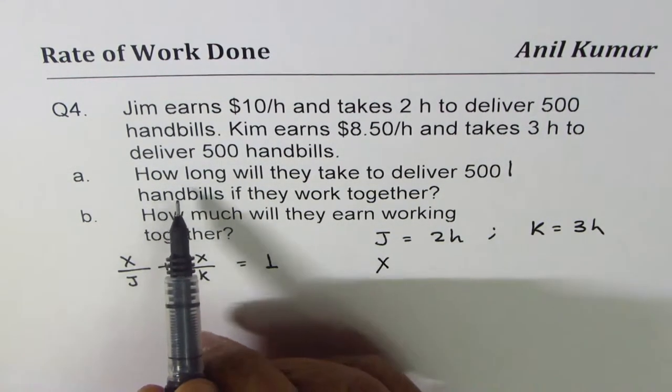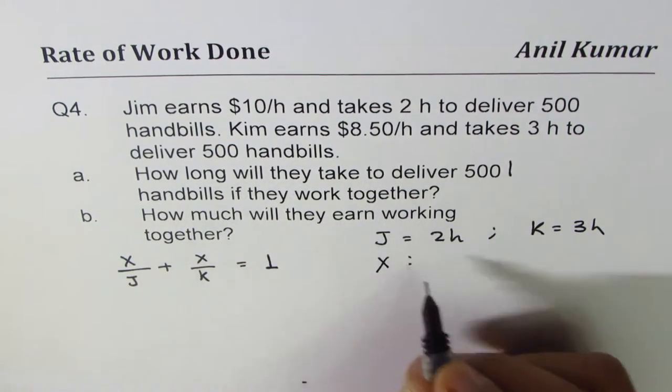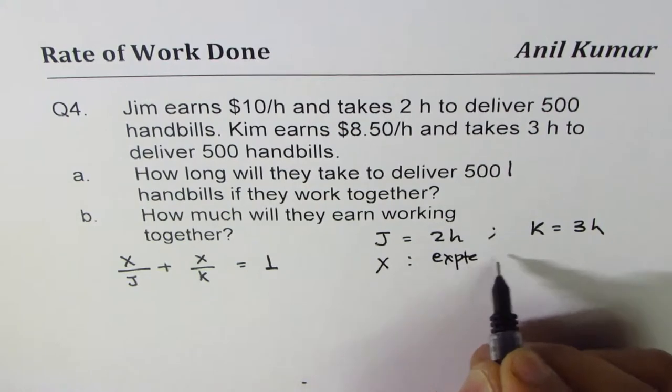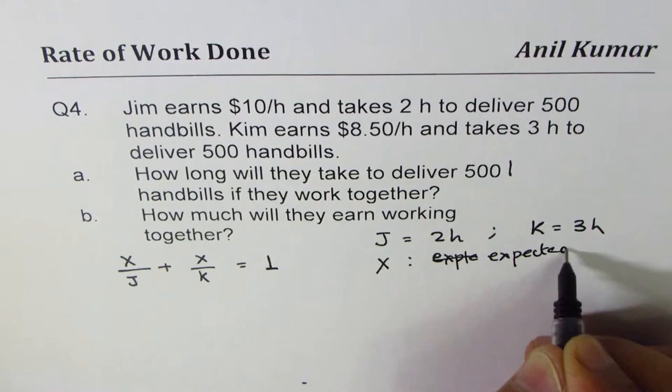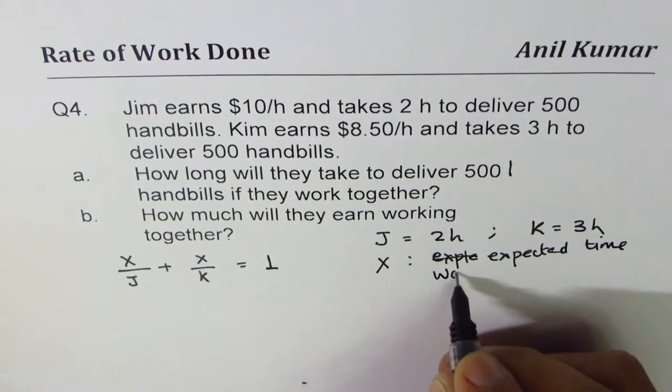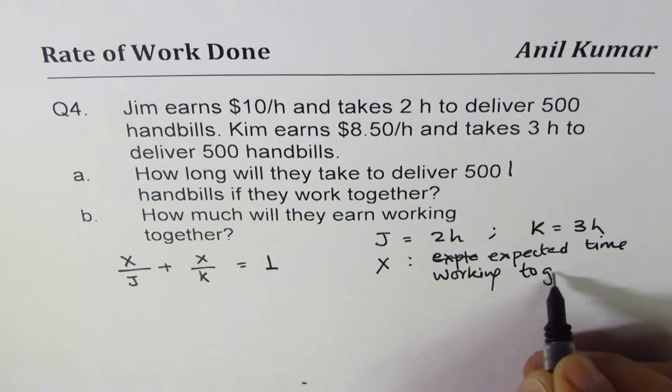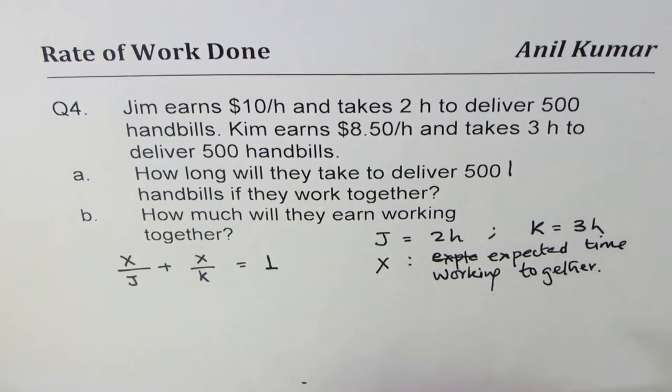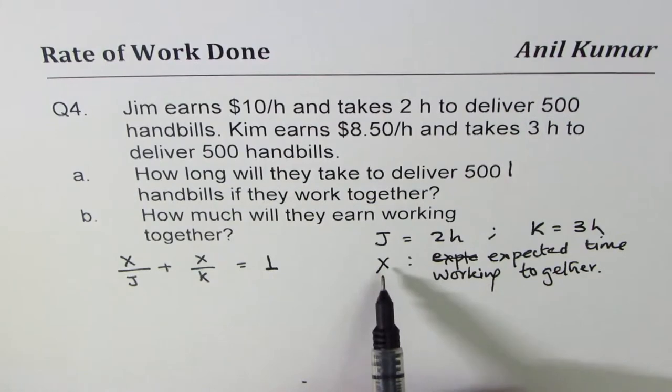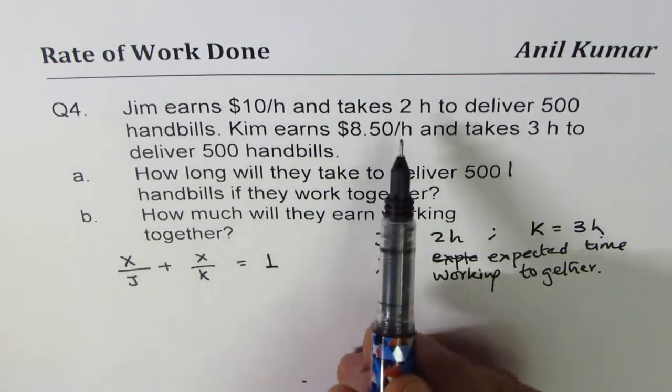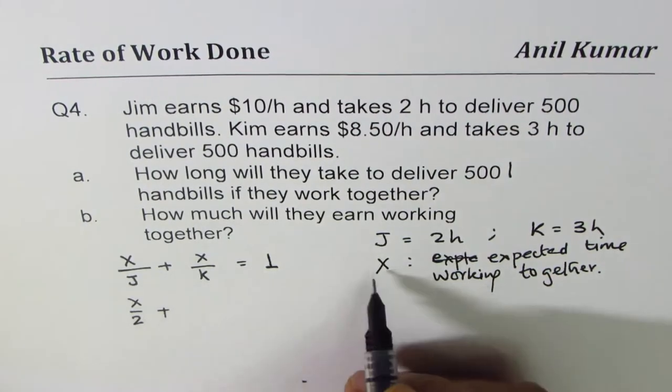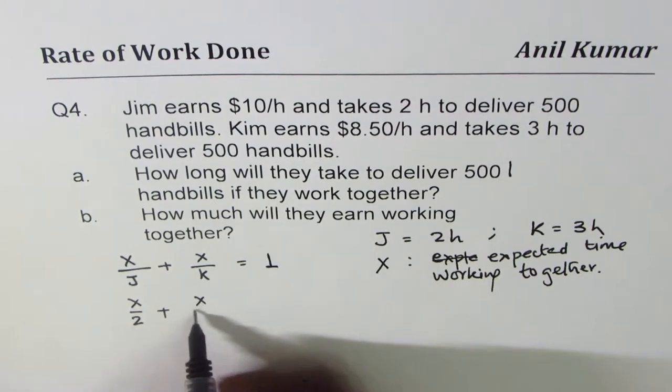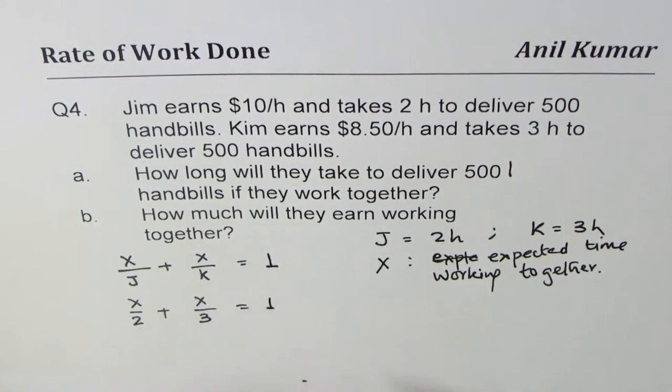And what is x? x, we are defining a new variable. How long will they take to deliver? x is expected time working together. So the concept is in x hours, Jim can deliver x over two. In x hours, Kim can deliver x over three. And total job is done, therefore it equals one. So we can find x from here.